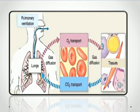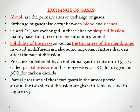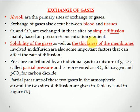Exchange of gases occurs between blood and tissues by simple diffusion. Simple diffusion means movement from high concentration to low concentration, or from high pressure to low pressure. Oxygen and carbon dioxide are exchanged at these sites by simple diffusion, mainly based on pressure or concentration gradient — movement from higher pressure/concentration to lower pressure/concentration.